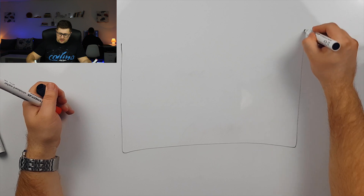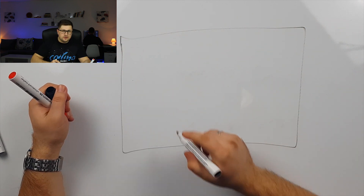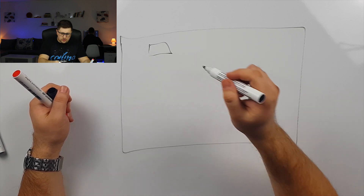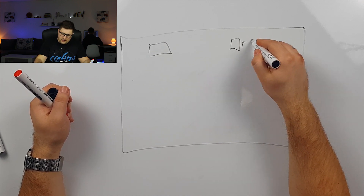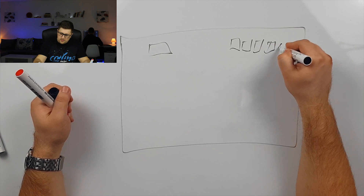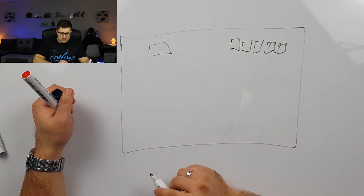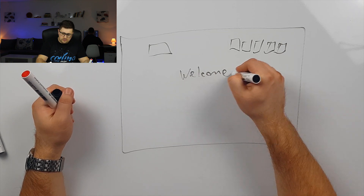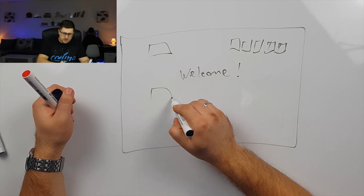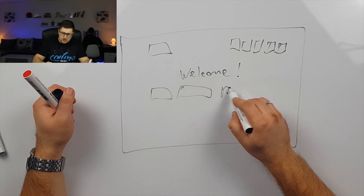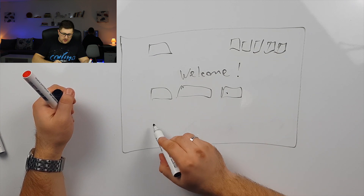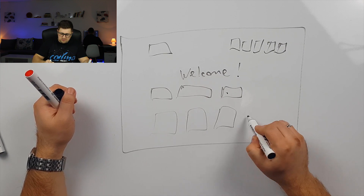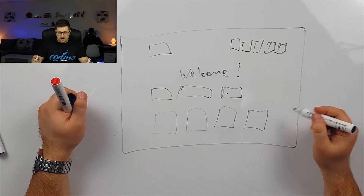So for example, let's say you want to have a website like this. Here you're going to have a logo, then here you're going to have some menu, then here maybe you want to have some headline, maybe you want to have some opt-in form,